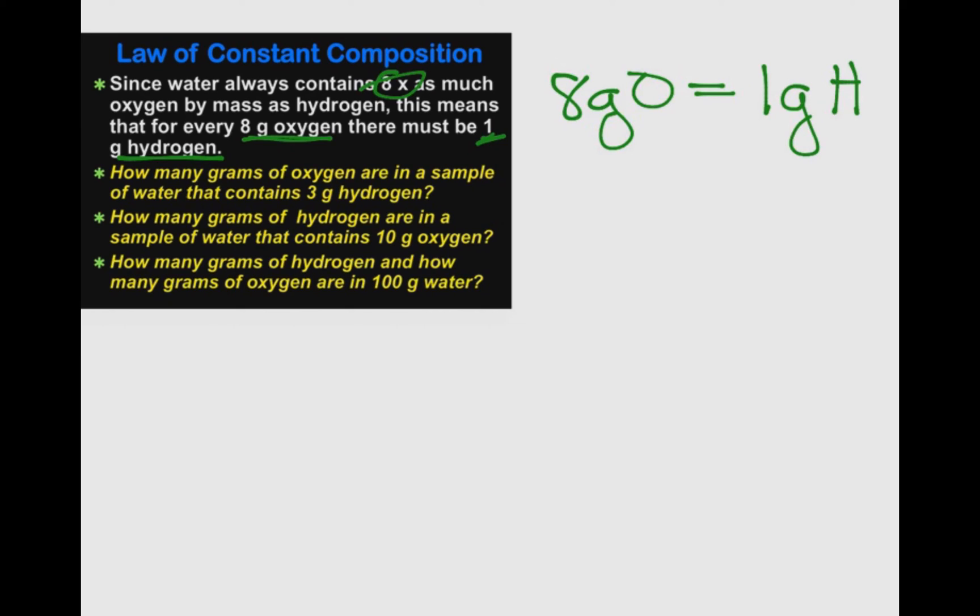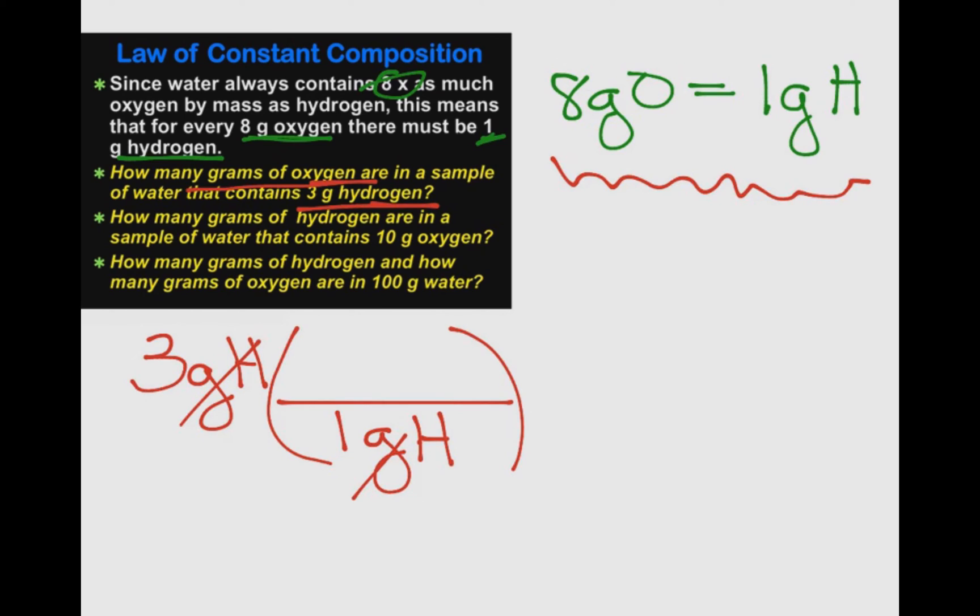Let's now solve the first problem. How many grams of oxygen are in a sample of water that contains 3 grams of hydrogen? To solve any problem in chemistry, the first thing we write down is the given. In this case, 3 grams of hydrogen is our given. The next step is to put in the conversion factor. The conversion factor we're going to get from right up there: 8 grams of oxygen with 1 gram of hydrogen. Now, 1 gram of hydrogen is going to go on the bottom so that the hydrogen cancels out. 8 grams of oxygen goes on the top, and we're left with 24 grams of oxygen. This means that if you have a sample of water that contains 3 grams of hydrogen, there must be 24 grams of oxygen.